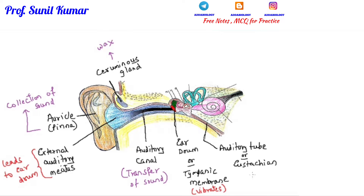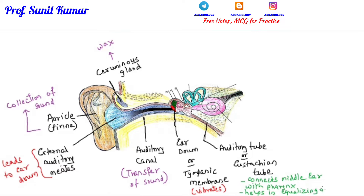There is the auditory tube, also known as the eustachian tube. The function of the eustachian tube is to equalize the air pressure in both ears. It connects the middle ear to the pharynx. If you close your nose and try to blow air out, the pressure in both ears becomes equal, so it helps in equalizing the ear pressure.